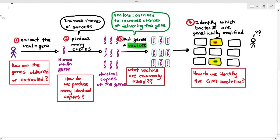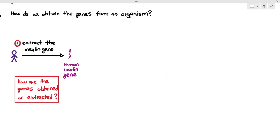In the previous video, we were talking about the important steps required to genetically modify an organism. For example, we wanted to produce genetically modified bacteria, and there were four important steps required: extract the gene from the source, produce many copies of the gene, put the gene into vectors, and identify the bacteria that have been genetically modified. One of the first important questions we have to ask is, how are the genes obtained or extracted?